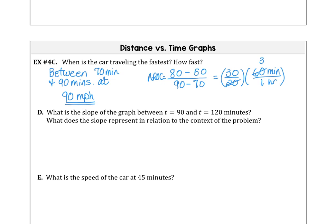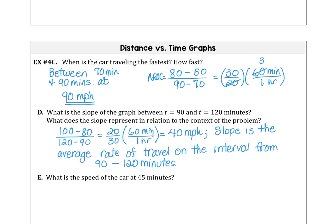In part D, what is the slope of the graph between 90 and 120 and what does the slope represent in relation to the context of the problem? I'm going to ask you to turn off the video and give this a try on your own, then come back and check your work. It looks like I have 100 minus 80 divided by 120 minus 90, which is 20 divided by 30, using our conversion of 60 minutes for one hour, produces 40 miles per hour. And I'm going to interpret that to say the slope is the average rate of travel in the interval from 90 to 120 minutes.